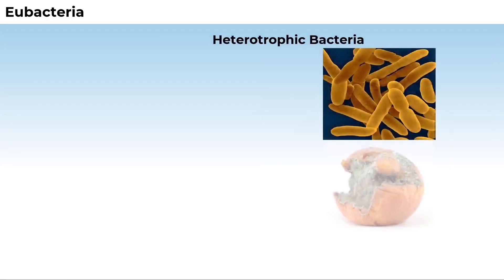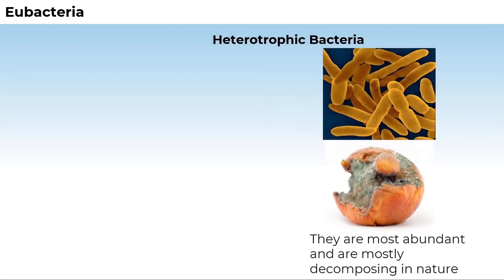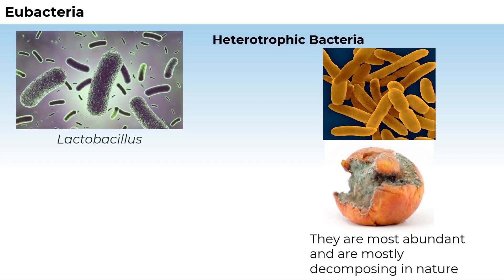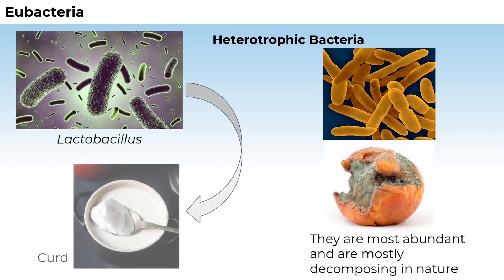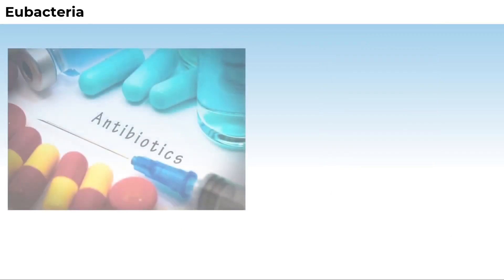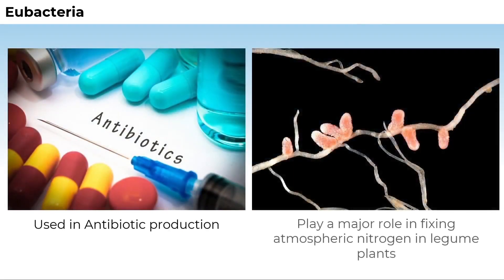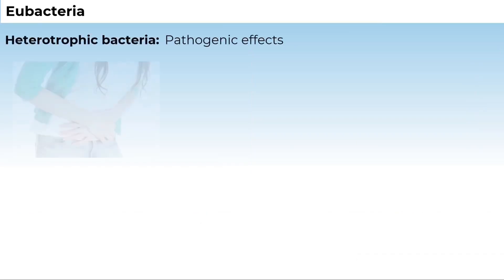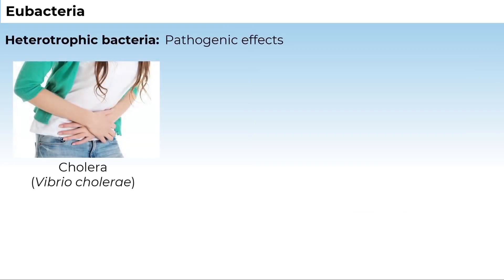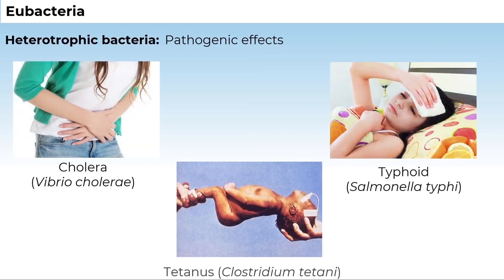Heterotrophic bacteria are most abundant in nature. The majority are important decomposers. Many of them have a significant impact on human affairs. For example, Lactobacillus is helpful in making curd from milk. They are used in the production of antibiotics. They play a major role in fixing nitrogen in legume plants. Some are pathogens causing damage to human beings, crops, farm animals, and pets. Cholera, typhoid, and tetanus are well-known diseases caused by different bacteria.